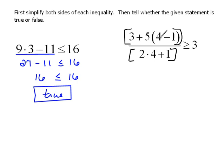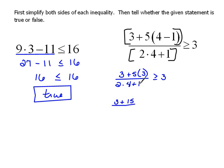In the numerator, we have to work the parentheses first, giving us 3 plus 5 times 3 over the denominator. Now in the numerator, we do 5 times 3 before the addition, so that's 3 plus 15. In the denominator, we have 2 times 4, which needs to be done before the addition, so 2 times 4 is 8, plus 1 — all greater than or equal to 3.